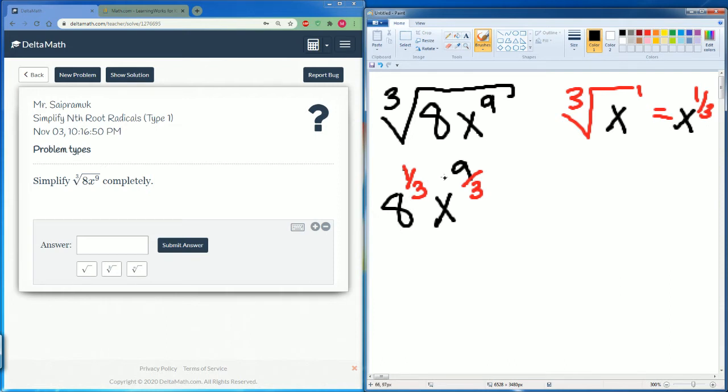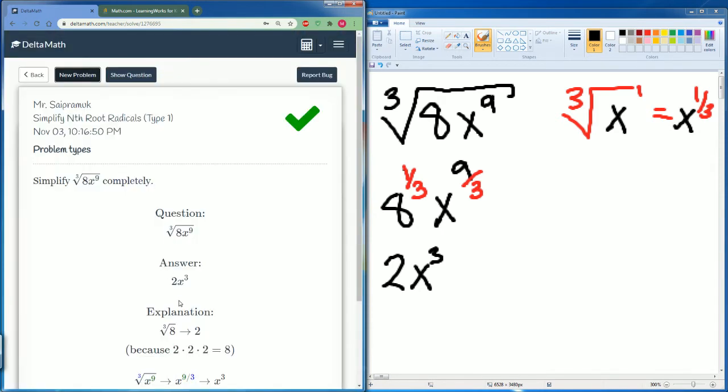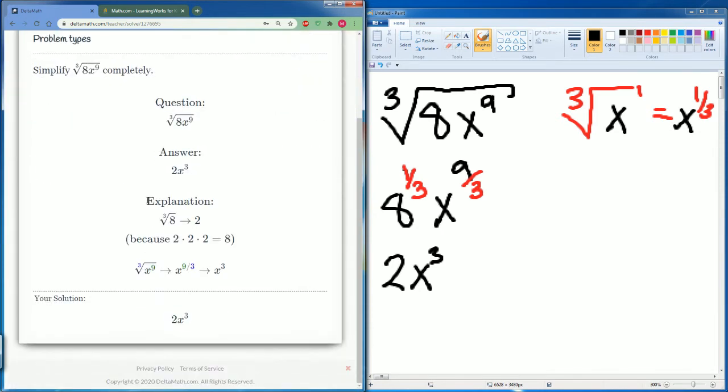So now I can do this in my calculator. 8 to the 1/3 power should be 2, let me just double check that. That is correct. And then this can be 9 divided by 3, which is just 3. So the final answer is 2x to the power of 3, and that is correct. Here are all the steps.